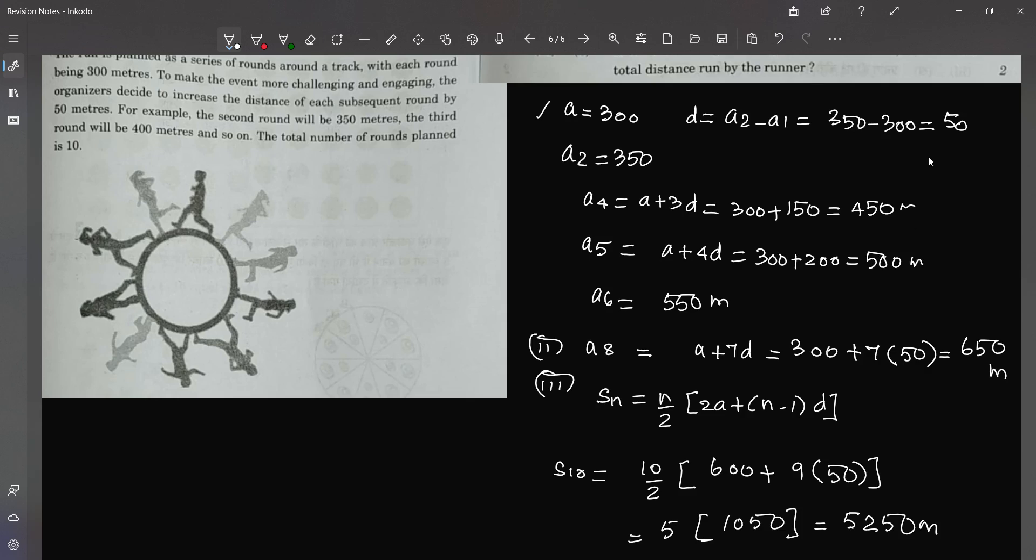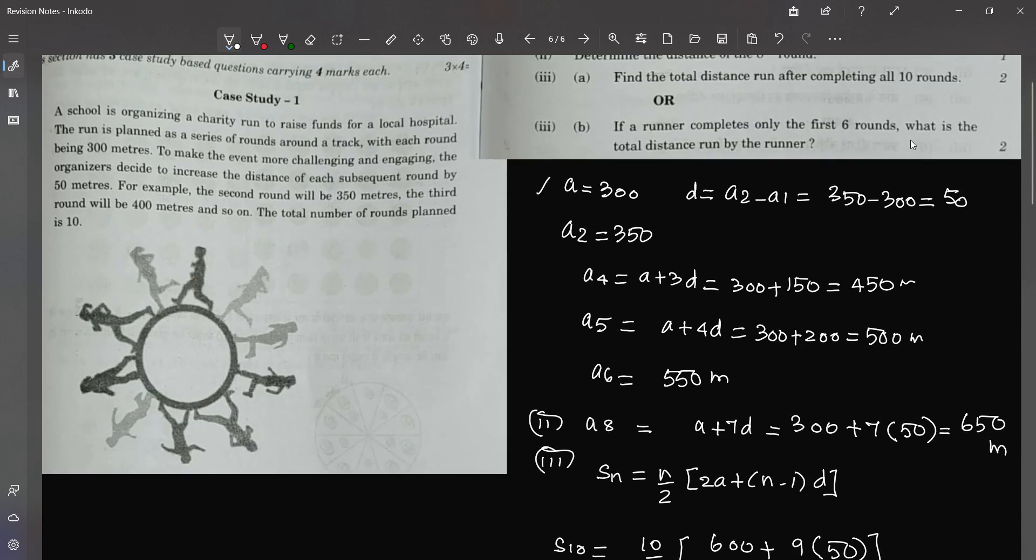So next question will be, if the runner completes only the first 6 rounds, what will be the total distance run? So for 3b, the total distance run until the first 6 rounds is going to be s6.